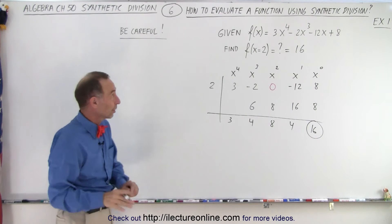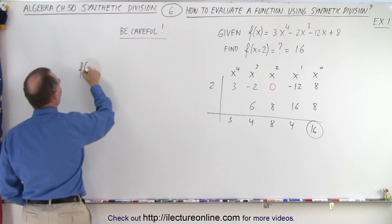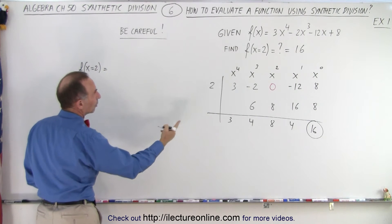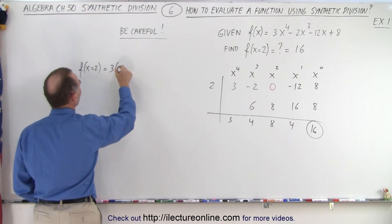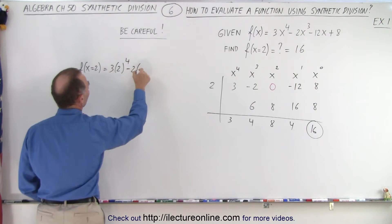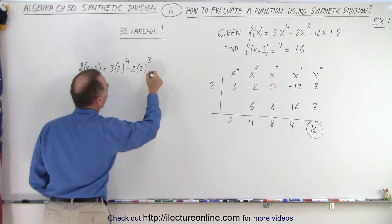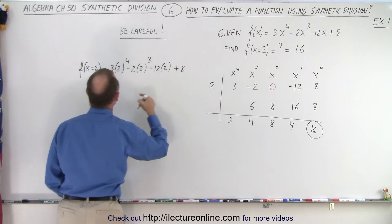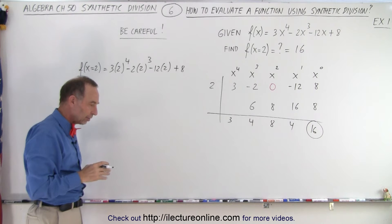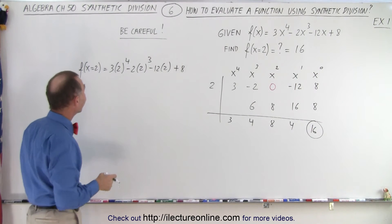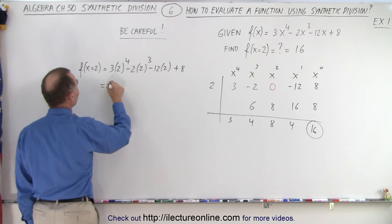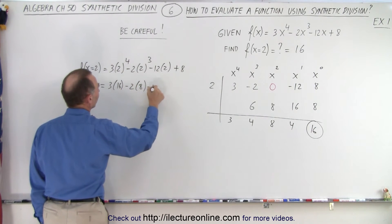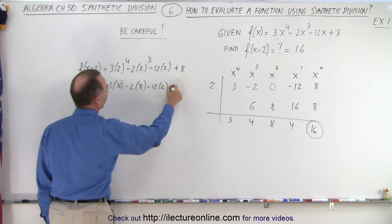Now, just to make sure we did it correctly, let's check. f of x equals 2. Let's replace every x with a 2. So we get 3 times 2 to the fourth power minus 2 times 2 to the third power minus 12 times 2 and plus 8. So 2 to the fourth power, that's 2, 4, 8, that's 16. That's 3 times 16 minus 2 times 8 minus 12 times 2 and plus 8.